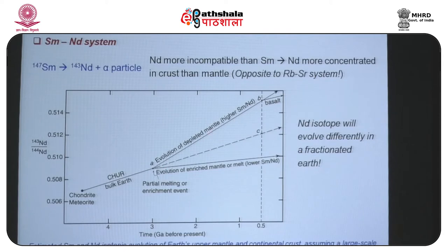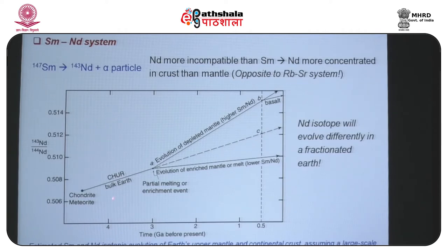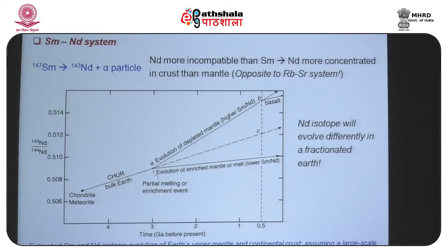Opposite to the rubidium-strontium system, the 143Nd/144Nd ratio of the mantle evolved with a much steeper slope than that of the bulk earth. The petrogenetic importance is the same: if we collect a rock and measure the 143Nd/144Nd ratio, we can find out the source of the rock — whether it is crust, mantle, or a combination of both.